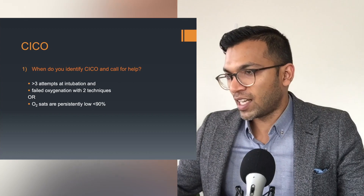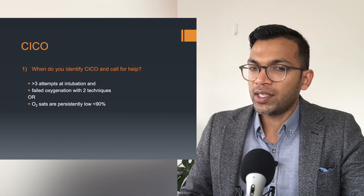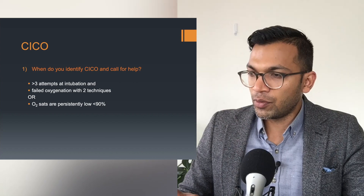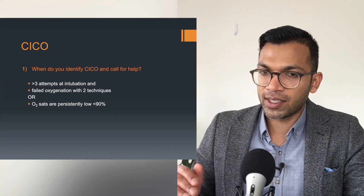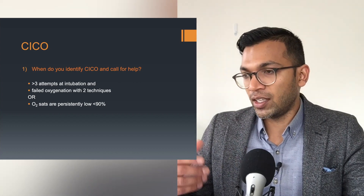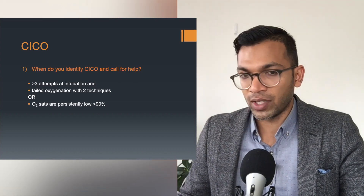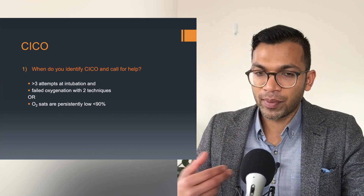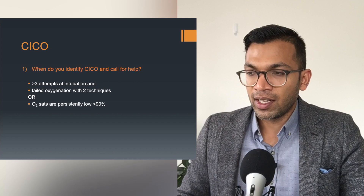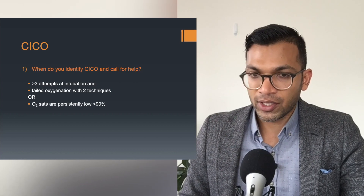So why not call it early and mobilize all your resources? Maybe you've tried only one technique but the sats are already persistently low at 90. Whatever markers they are, I need you to have some hard markers where you call CICO early when you're senior and practicing independently, because you don't want to go down that rabbit hole where things are already too late. For example: I've failed bag mask ventilation and intubation - I will call CICO whilst I'm still trying an LMA or intubation.